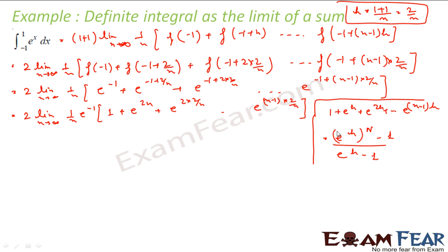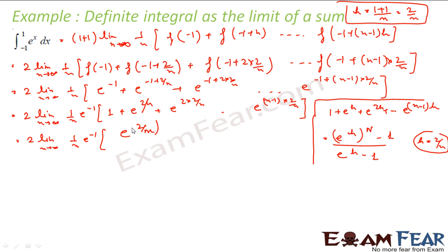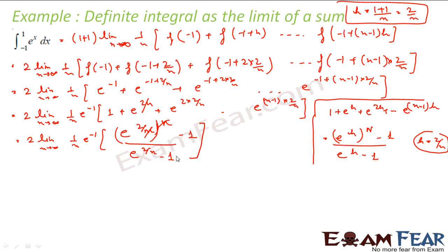Comparing these two, my h is nothing but 2 by n here. So this becomes 2 into limit n tends to infinity, 1 by n, e to the power minus 1. The series sum becomes e to the power 2 by n to the power n minus 1, all divided by e to the power 2 by n minus 1. Simplifying, e to the power 2 by n to the power n gives e to the power 2, so the numerator becomes e to the power 2 minus 1.